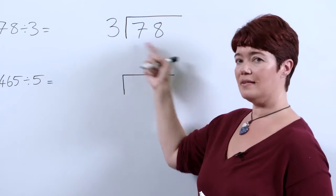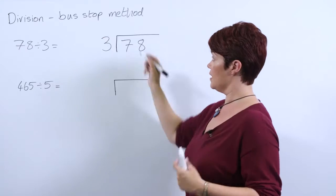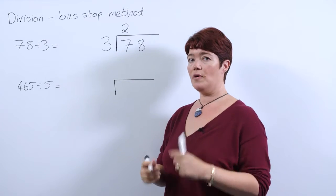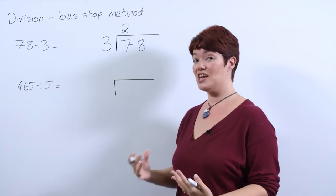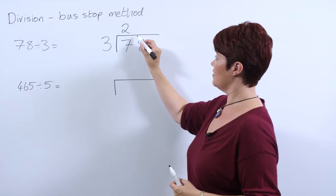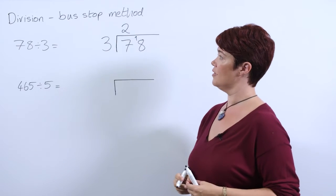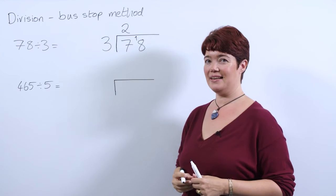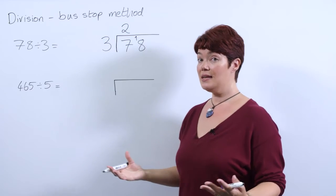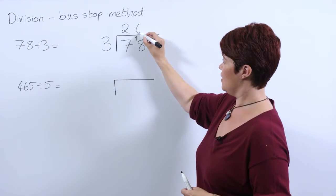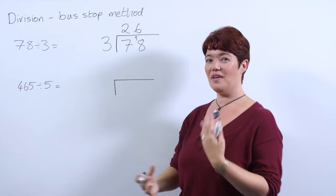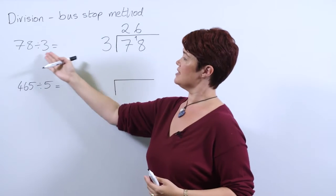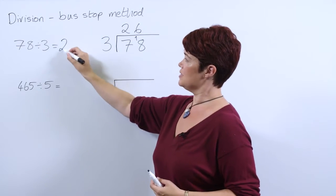How many threes can we get out of 7? The answer is two groups of three. That leaves us one group of 10 left, and as we saw before we can exchange that for ones, so our 10 becomes 10 ones. We've now got how many groups of three can we make out of 18? How many threes in 18? That would be 6. Hopefully our pupils' times table skills will help them with this. So now we've got our answer: 78 divided by 3 is 26.